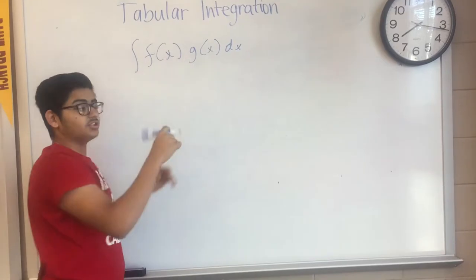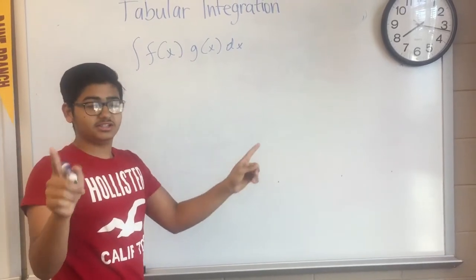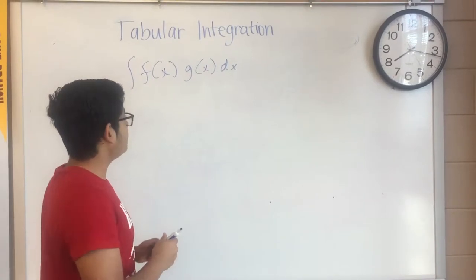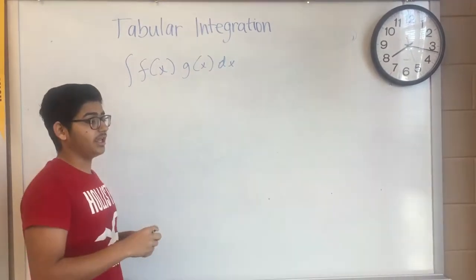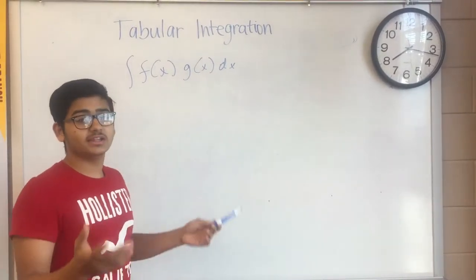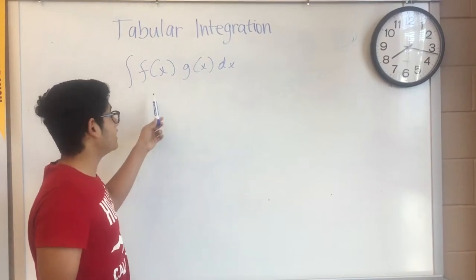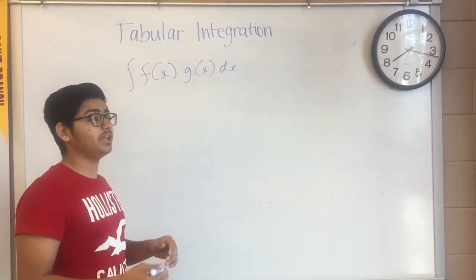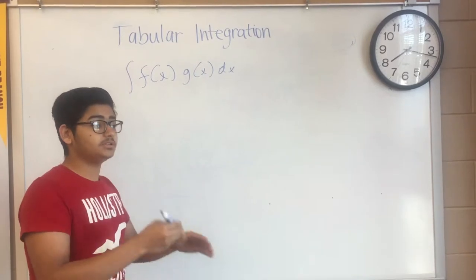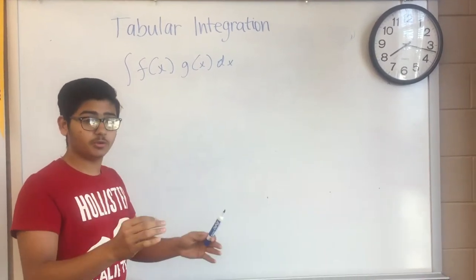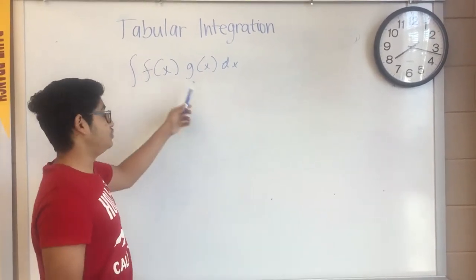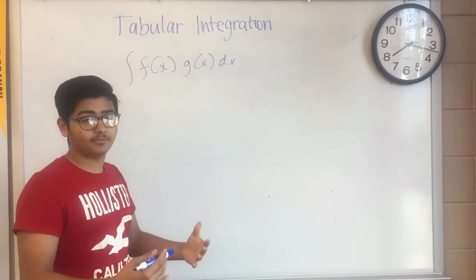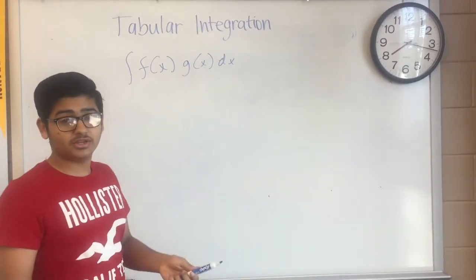f and g are two different distinct functions. The way we use tabular integration is: one of the functions — let's say f — is a function where you can take the derivative of it multiple times until it reaches zero. And g can be a function where it can be continuously integrated. Let me give you an example.